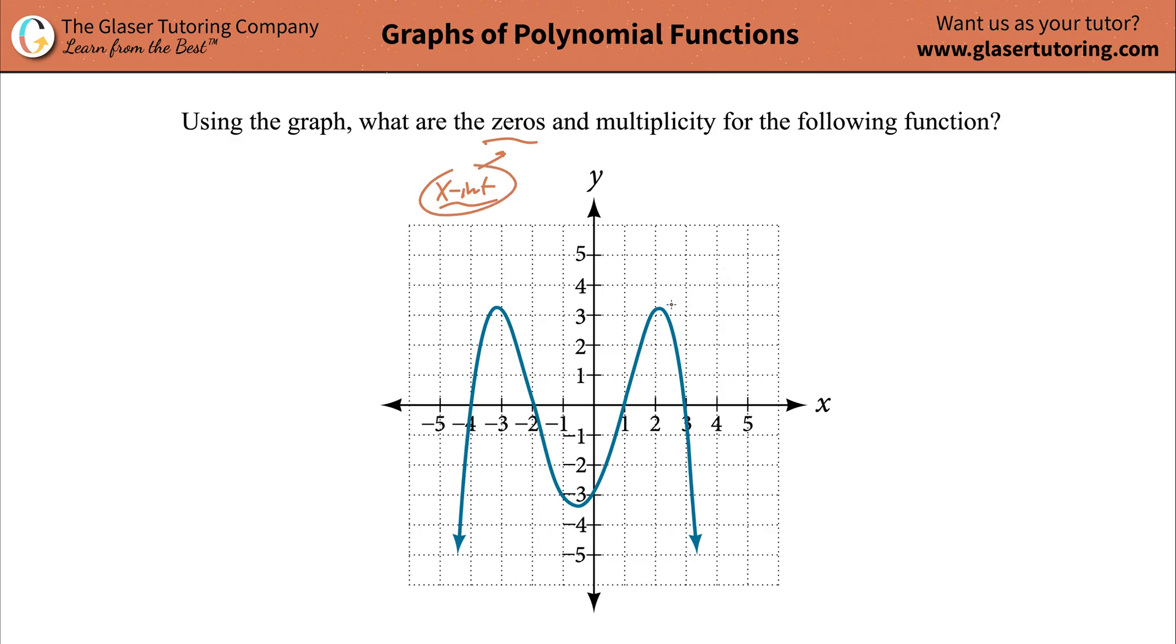And what is x-intercept? Well that's the location where the function or the graph will cross the x-axis. So if you notice we have three spots where that graph crosses the x-axis. So it crosses it at negative 4, negative 2, 1, and 3.